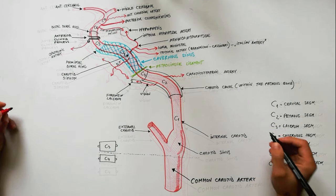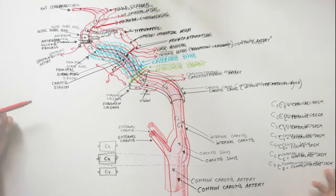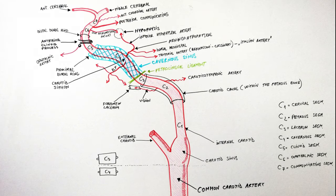The internal carotid artery can receive blood via an important collateral pathway supplying the brain — the cerebral arterial circle, which is more commonly known as the circle of Willis.